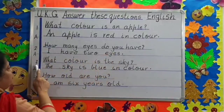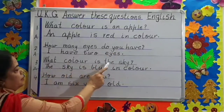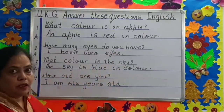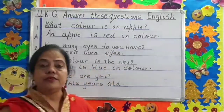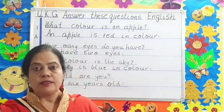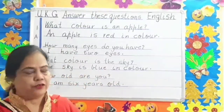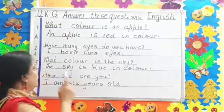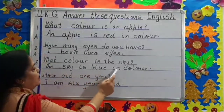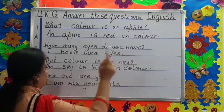Question number three. What color is the sky, children? What color is the sky? The sky is blue. The sky is blue in color. Full stop.